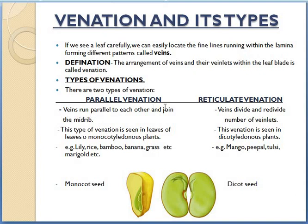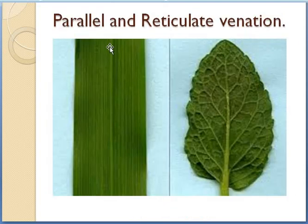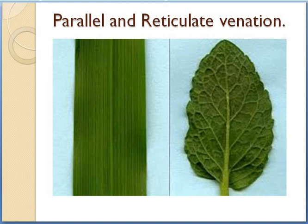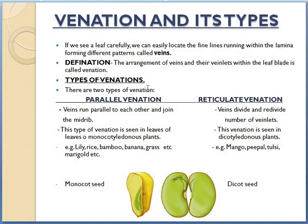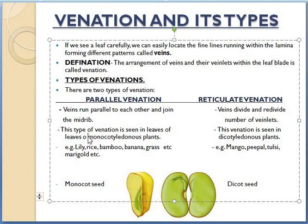Veins run parallel to each other and join the midriff. This center line of the leaf is called the midriff. So veins run parallel to each other and join this center line called the midriff. This type of venation is seen in leaves of monocotyledonous plants.